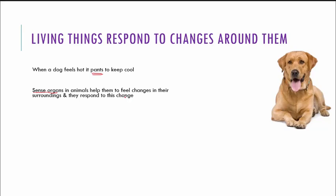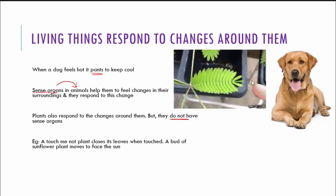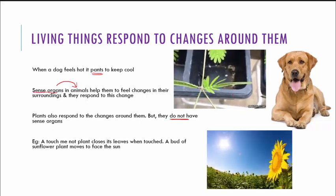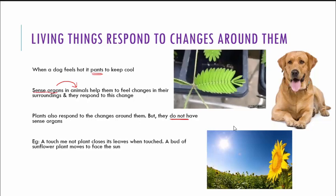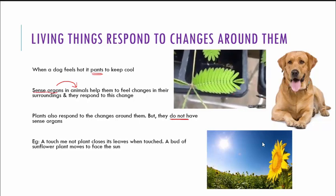What about plants then? Sense organs are present only in animals. Plants also respond to changes around them, but they do not have any sense organs. If you see the touch-me-not plant, the minute it is touched, it is going to close. Similarly, if you see the bud of a sunflower, it will turn and face towards the sun. So these are examples of how plants respond to changes around them.